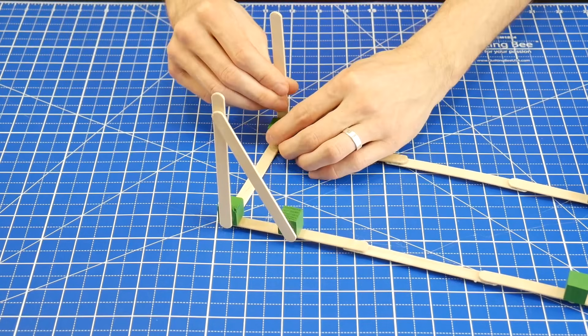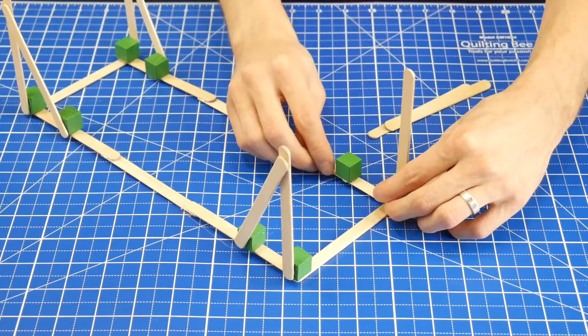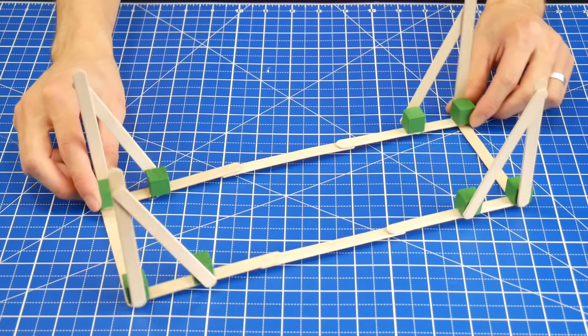Then, create two identical support structures. This is what's actually going to hold up the bridge. It should look something like this.